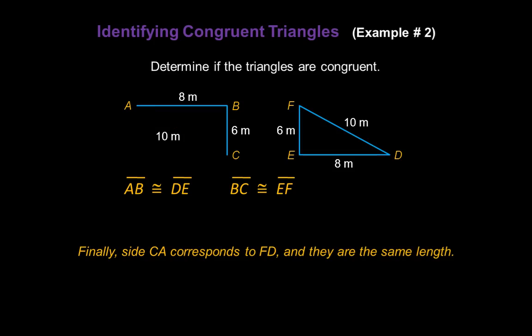Finally, side CA corresponds to FD on the other triangle, and they're both the same length as well at 10 meters. So we can write that those line segments are congruent as well. Line segment CA corresponds to line segment FD.